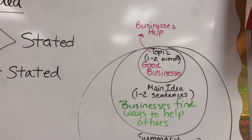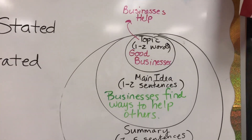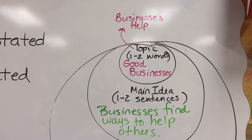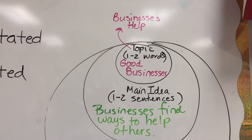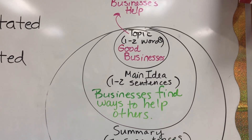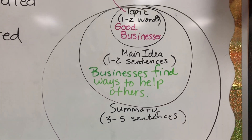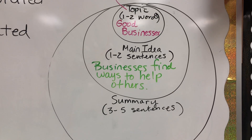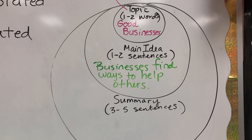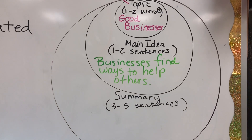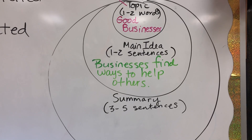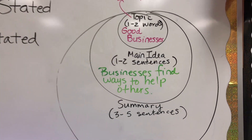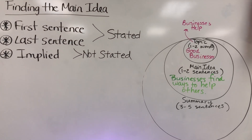The topic is one to two — sometimes even one to three — words about what the passage was about. The main idea contains the topic and is one to two sentences. The summary contains the topic and main idea and is made up of three to five sentences that give a little more detail on what the main idea is, including those important supporting details that tell you more about the overall topic. That's basically what we did today for reading.